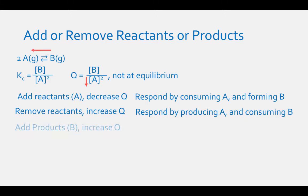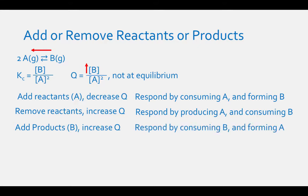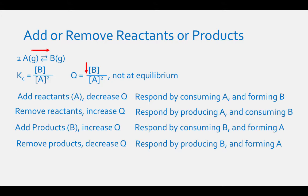If you add products B, you will raise the value of Q because you are increasing the numerator, and the reaction will shift to the left. The reaction will respond by consuming products B to form more reactants A. If you remove products, you will lower the value of Q because you are decreasing the numerator. Therefore, the reaction will shift to the right. The reaction will respond by producing products B and consuming reactants A.